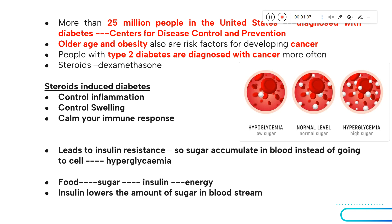The common steroid given during cancer treatment is dexamethasone. This image shows the difference between normal sugar level, hypoglycemia, and hyperglycemia. Hypo is nothing but low sugar — the white dots here represent sugar. In normal sugar you can see how much there is, and in hyperglycemia the white dots are much more. Here they are few, which is why it is called hypoglycemia.